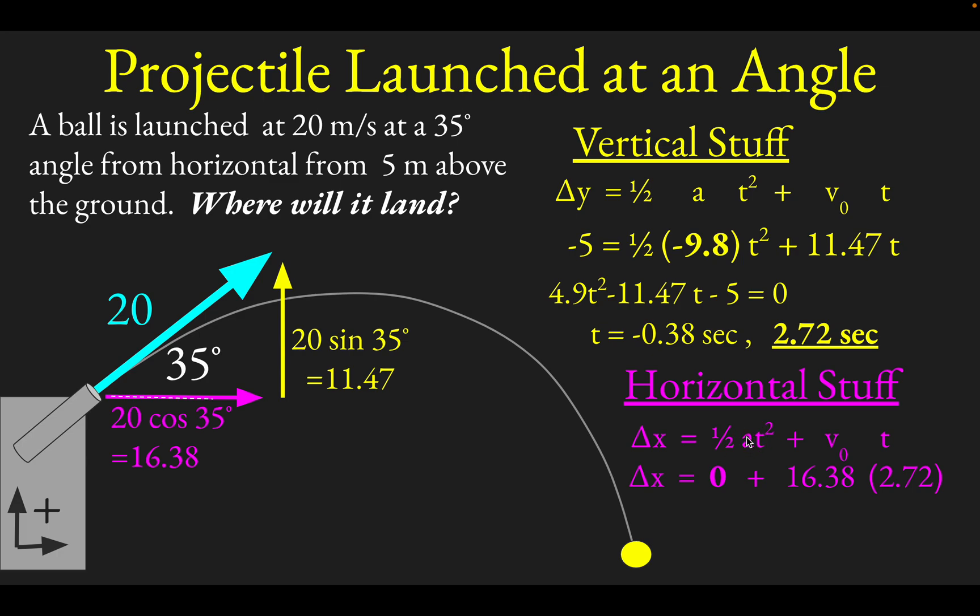Our v_initial then is going to be this horizontal initial velocity of 16.38, and then we'll multiply by the time that the ball was in the air. What you find when you do that is this Δx quantity is 44.6 meters. So the ball travels 44.6 meters horizontally from where it was launched.